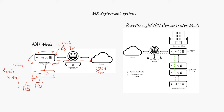To send traffic to the internet, it translates those private addresses to the public IP address 2.2.2.2 assigned by your internet service provider. That mode is needed to segregate or divide the single internet connection from the LAN. That's the main differentiator between NAT mode and pass-through or VPN concentrator mode.